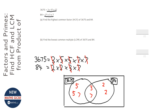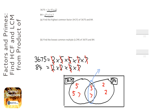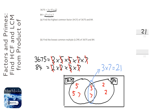Now to answer question A, to find the highest common factor, all you need to do is multiply the overlapping ones together. So the highest common factor is 21, and that's it. It's that easy.